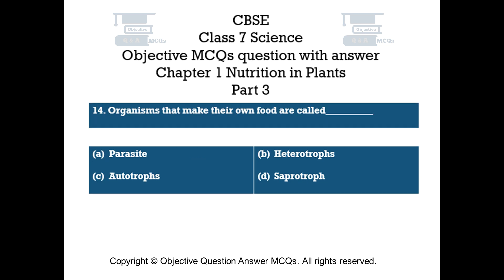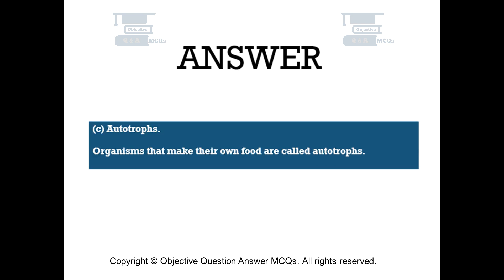Question number 14. Organisms that make their own food are called. Option A: Parasite. Option B: Heterotrophs. Option C: Autotrophs. Option D: Saprotrophs. The right answer is option C: Autotrophs. Organisms that make their own food are called autotrophs.